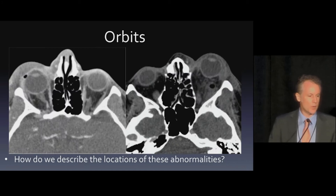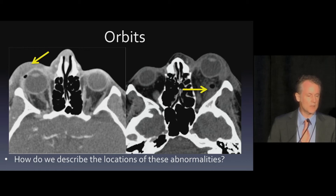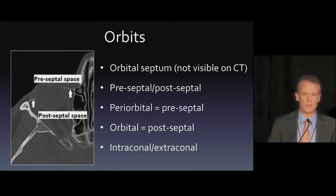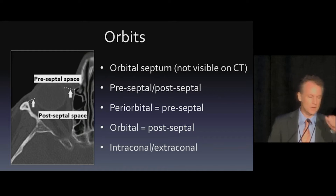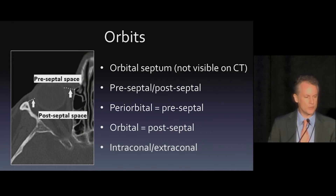Let's move to the orbits. These are two separate patients, and I want to address how we describe the locations of these abnormalities, because how we describe them really helps drive treatment. Let's step back and look at the orbital anatomy. There's the orbital septum — we can't see it on CT, but it's a thick fascia that runs from the orbit to the globe. It's very effective at preventing infections from moving from anterior to posterior. Because of the septum, we usually say something anterior to the orbit is preseptal, and something posterior to the septum is postseptal.